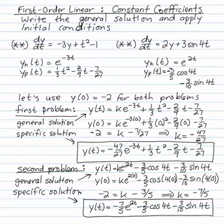Now let's take the homogeneous solution and the particular solution we've generated for these two equations and apply some initial condition. Let's use the initial condition y(0) = -2 for both problems.